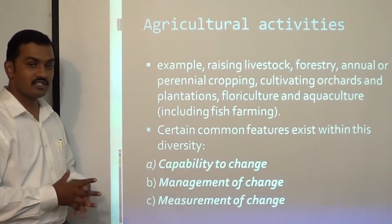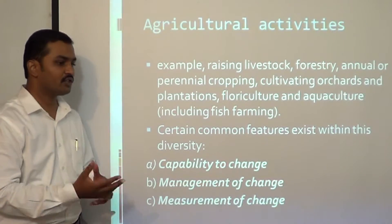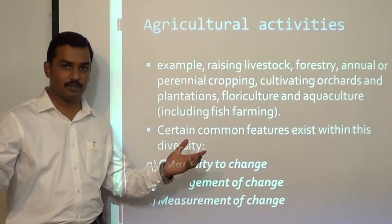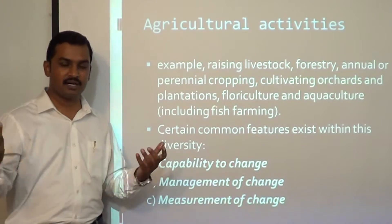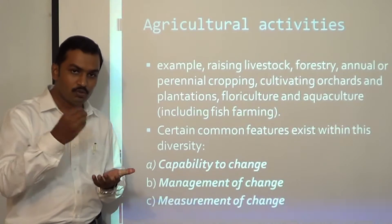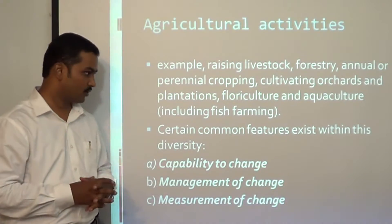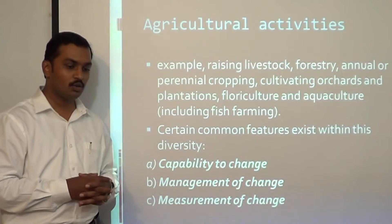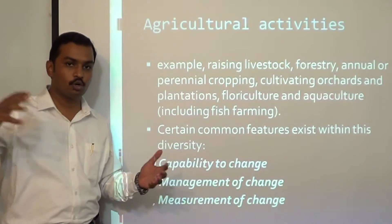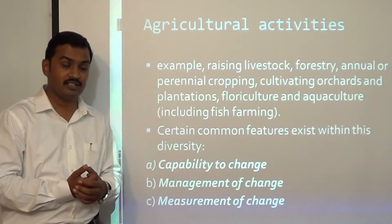Certain common features exist within this diversity of agricultural activities. First, capability to change: in fish farming you buy very small fish, leave them in a pond, they grow over time and you harvest and sell them. In wheat farming, small plants give rise to lots of agricultural produce. In sheep farming, you buy small sheep, they grow wool, increase in size, and you can sell them for meat and also sell the wool — there is change happening.